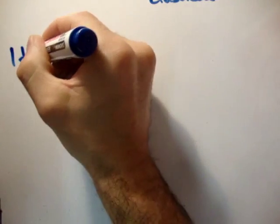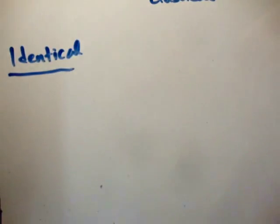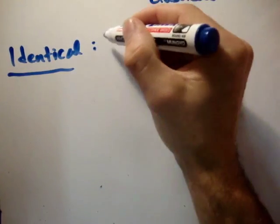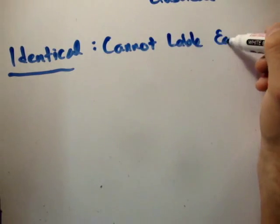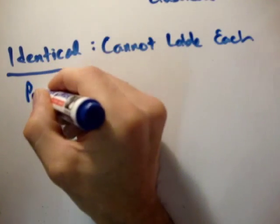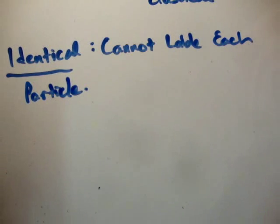Well, what does identical mean? Well, I hinted at it there a moment ago. Identical means that you cannot label each particle. Because, well, if you swapped one particle for the other, you couldn't possibly tell that you swapped it.